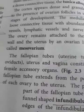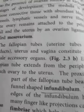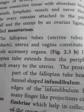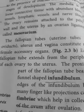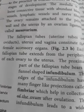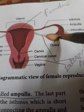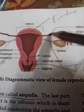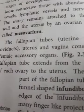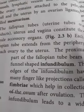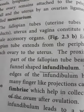The fallopian tubes are also called the uterine tubes or oviducts. The uterus and vagina constitute the female accessory organs. Each fallopian tube extends from the periphery of each ovary to the uterus.